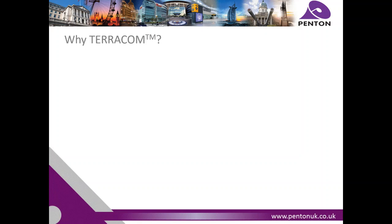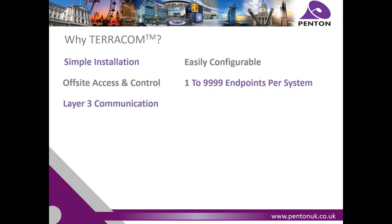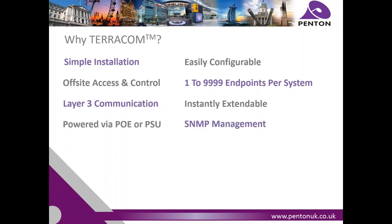There are a plethora of reasons to choose Terracom as your audio solution. Installation is as simple as connecting a network cable from a switch to your chosen module, eliminating the need for long speaker lines. Initial setup, configuration and ongoing system changes are easily achieved and, depending on network access, these can be done off-site if necessary. The Terracom system capability is impressive, with up to near 10,000 modules achievable on one system, all functioning with layer 3 communication. Extending an existing system is as simple as adding another box onto the network, with the IP address for that module becoming recognised upon connection.